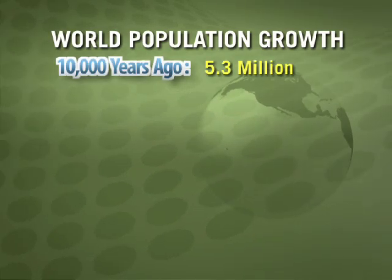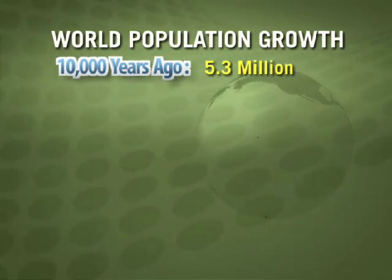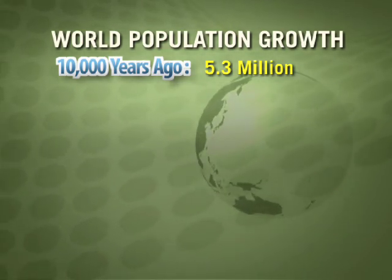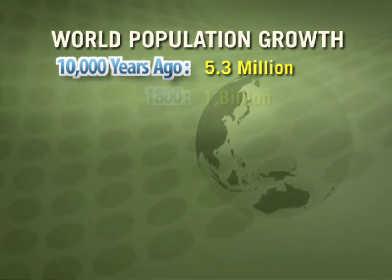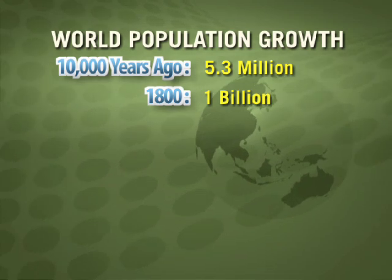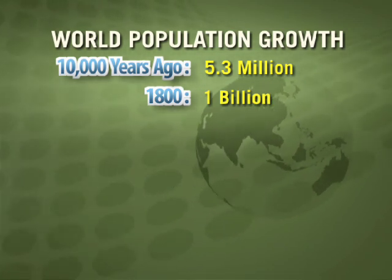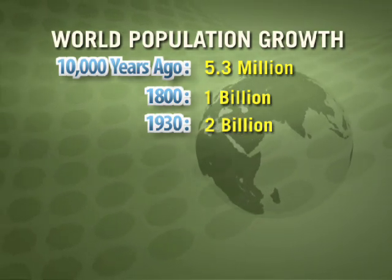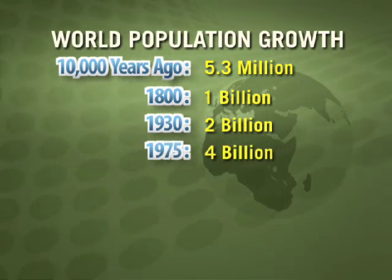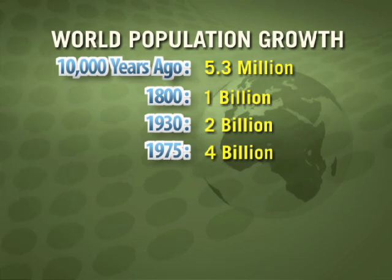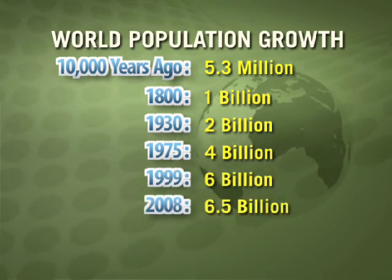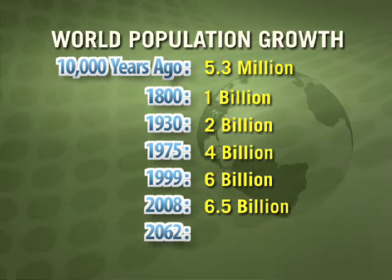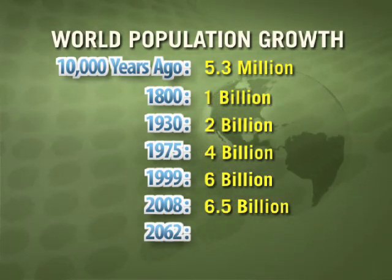Take a look at how population has grown over time. Notice that after the agricultural revolution, population began to increase. It took almost 10,000 years for population to reach 1 billion, then 130 years to double to 2 billion. But it took only 45 years to double again to 4 billion. So at today's doubling rate, it will only take 54 years for us to once again double the world's population.